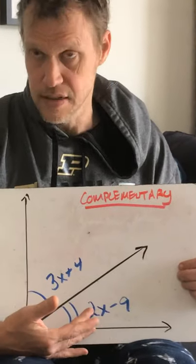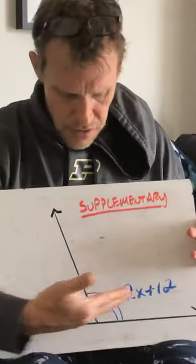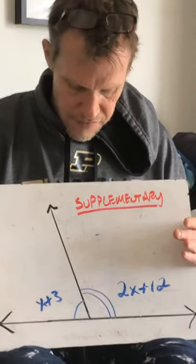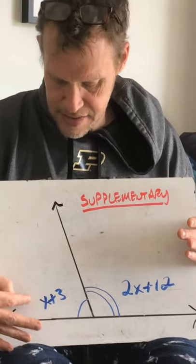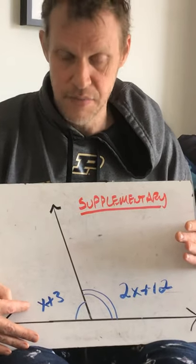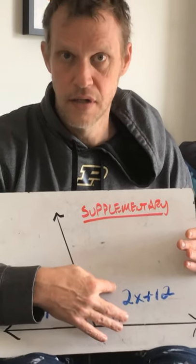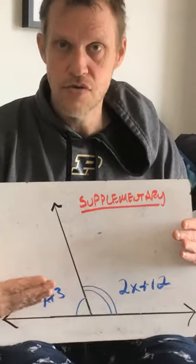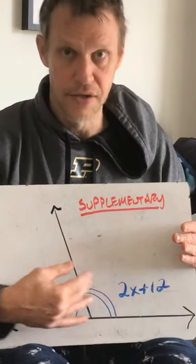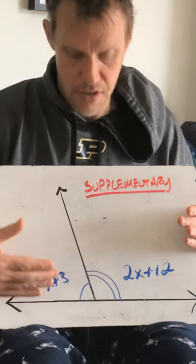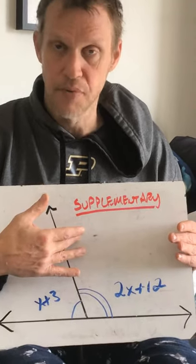That's how you solve it with complementary angles. Now supplementary — this should look familiar. Supplementary angles form a straight angle, but now instead of giving you an x and a 63 to find the missing angle, they say your angles are x plus 3 and 2x plus 12. They're supplementary, so you know they equal 180. You combine your like terms, combine your x's, combine your constant terms, form your equation, and solve it — but now you make it equal to 180.